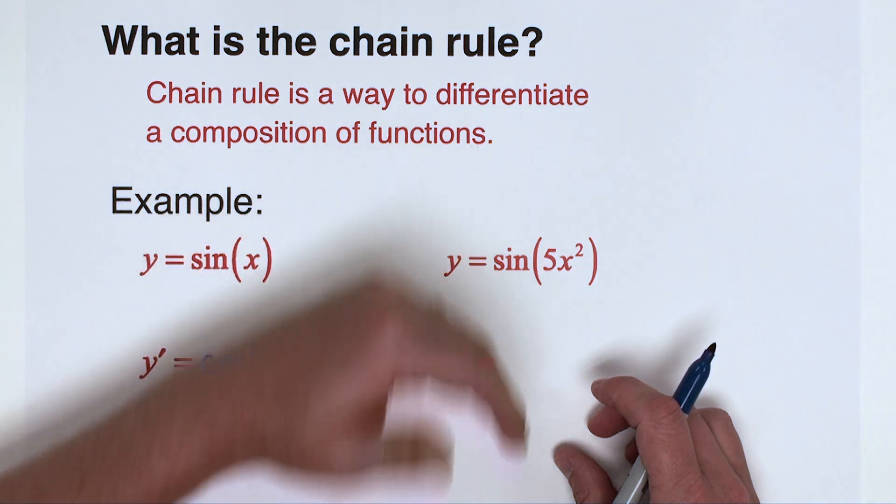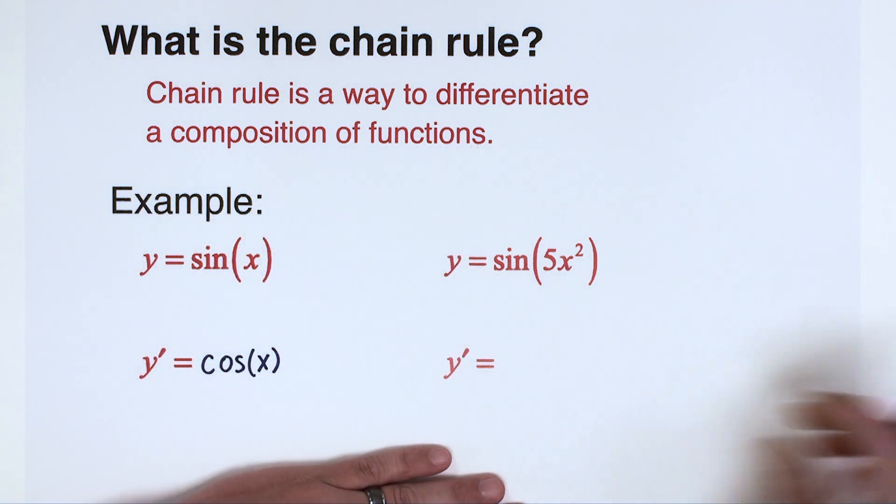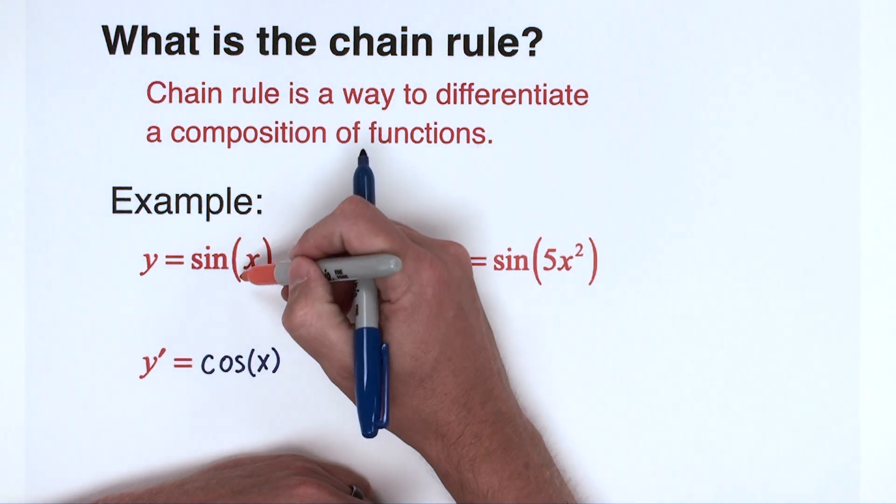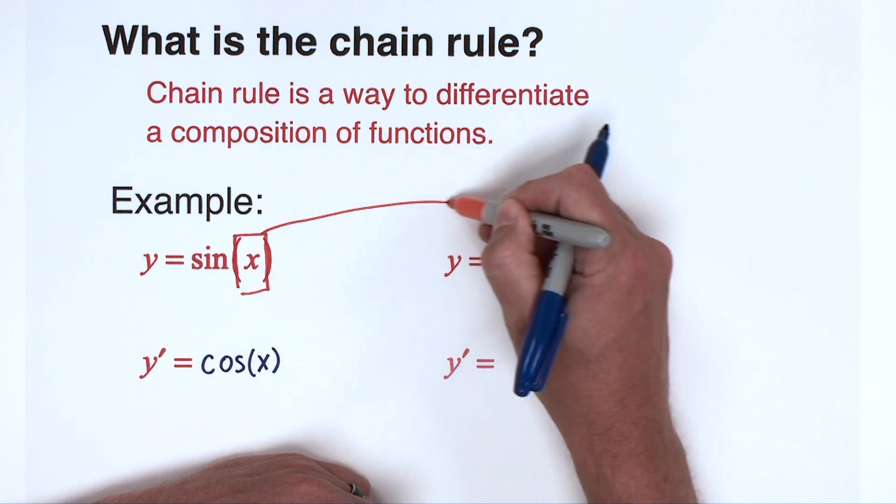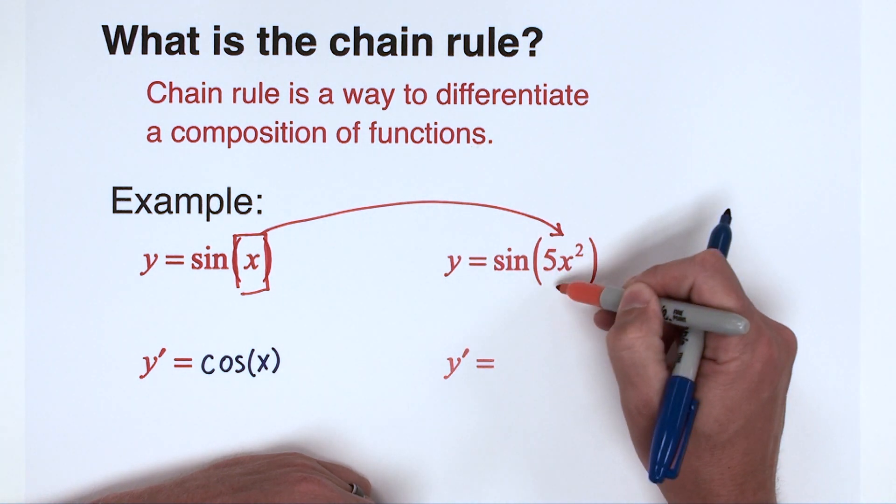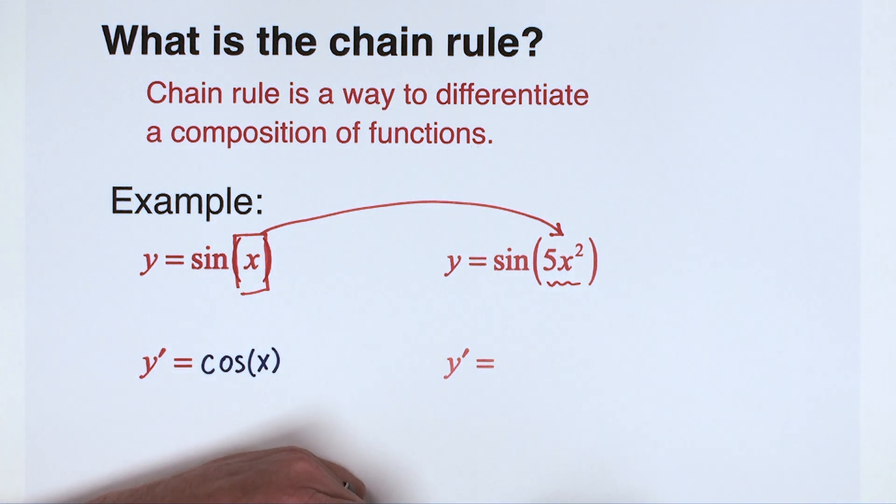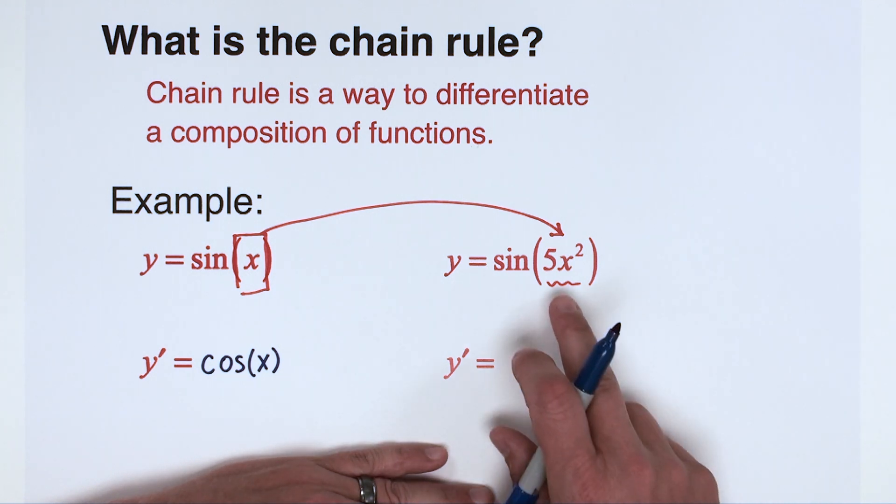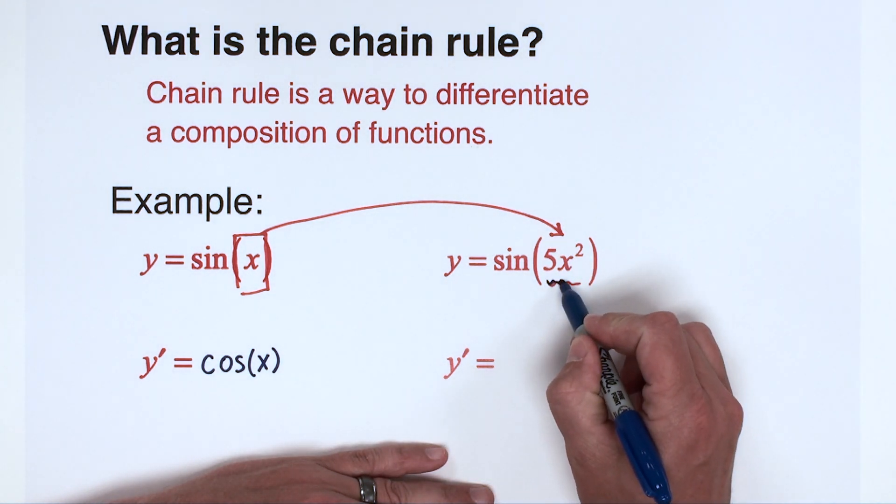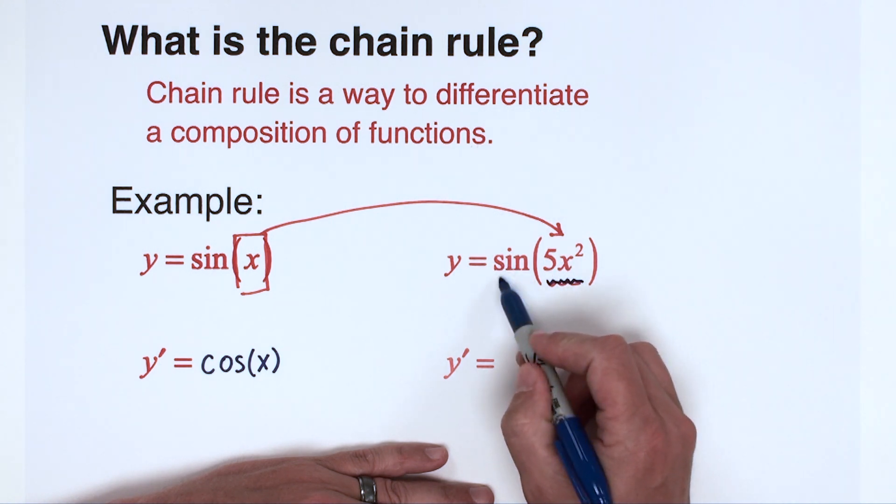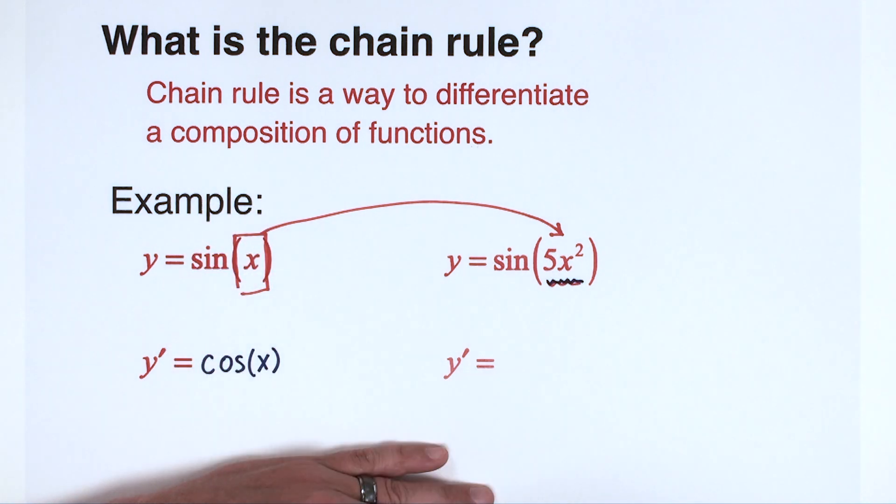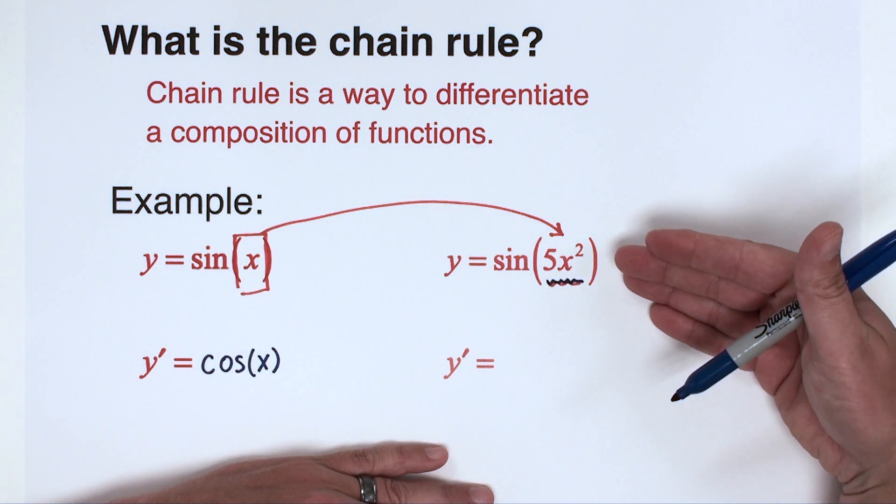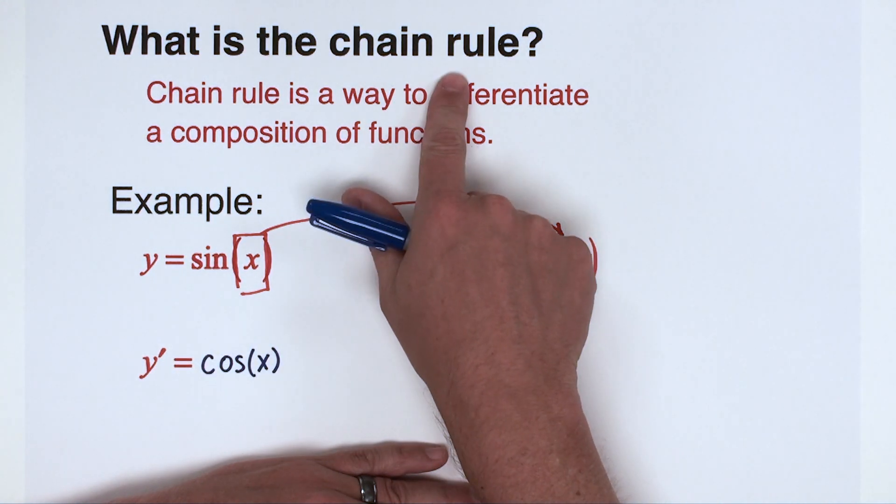Well the question becomes, over on this second example, what happens when the x which is inside of the sine x, what happens when we replace that x with something more complicated? Okay, it's not simply x anymore, but in this example I wrote it to be 5x squared. Now here we have a case where we have this 5x squared function that is inside of the sine function and that illustrates a composition. And so the question is how do we differentiate a function like this? The answer is that you need to use chain rule.